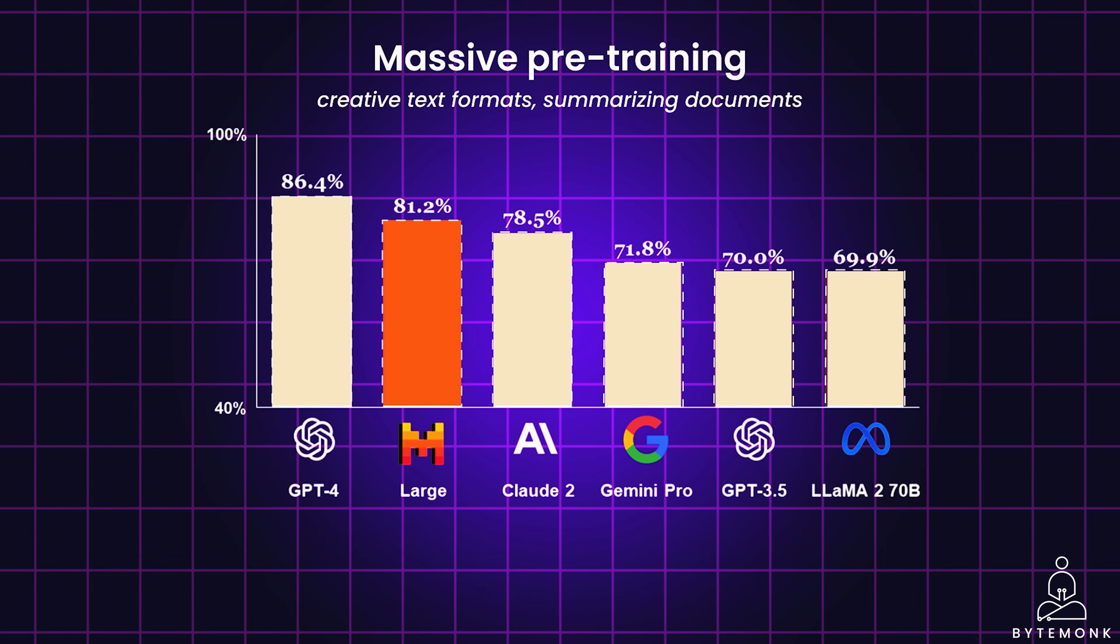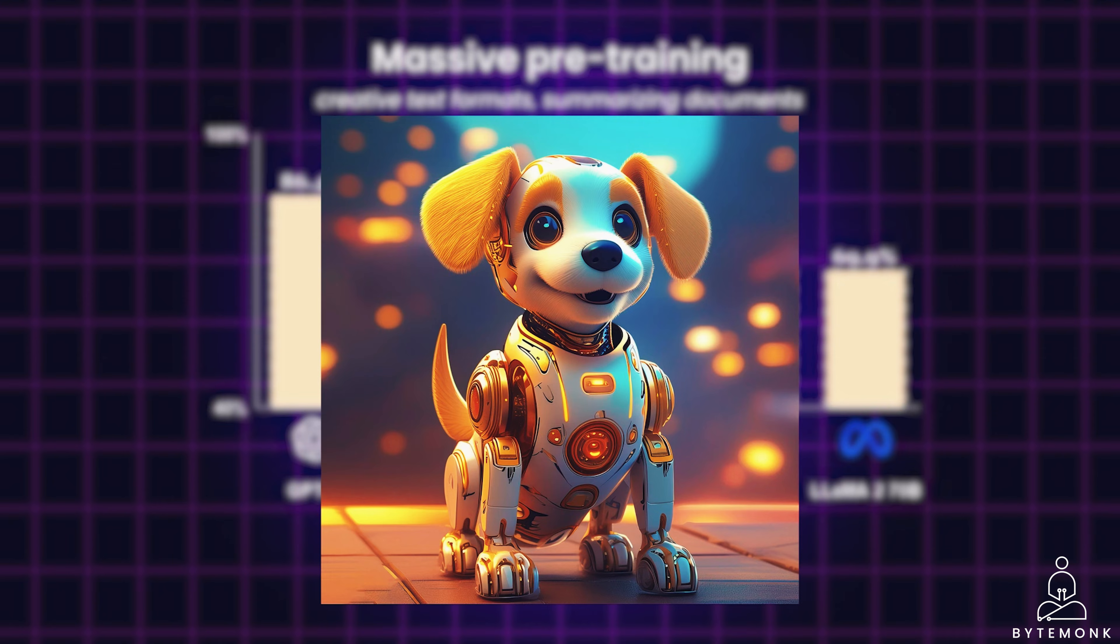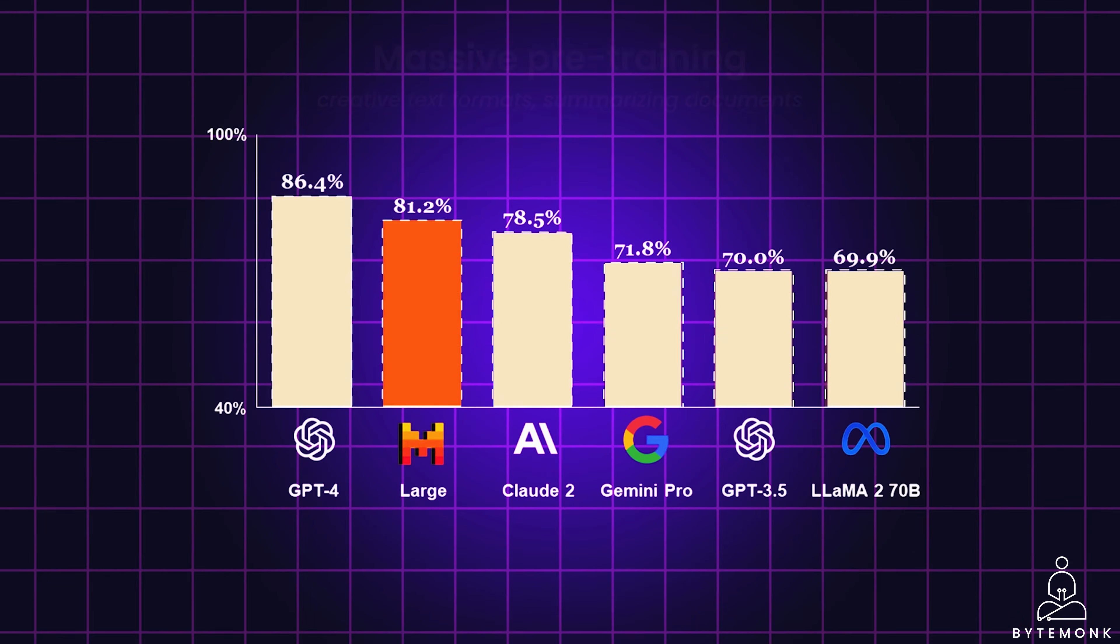Models like Imagen and DALI2 generate realistic or stylized images from simple text descriptions. This is achieved through their pre-training on large text image datasets.